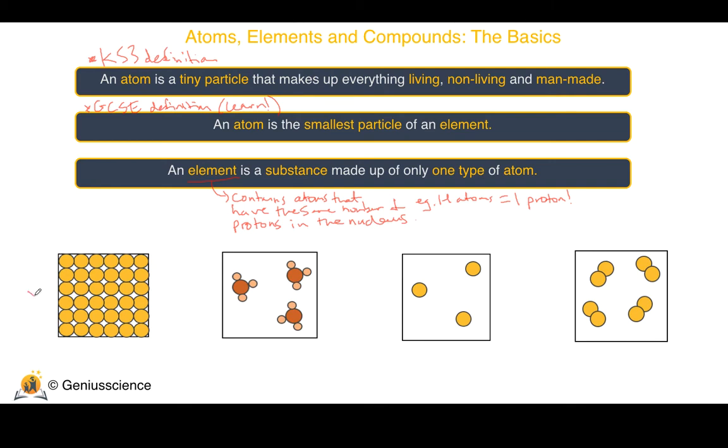Okay, so we can see we have elements here, here and also here. Notice that there is only one type of atom represented by one colour.